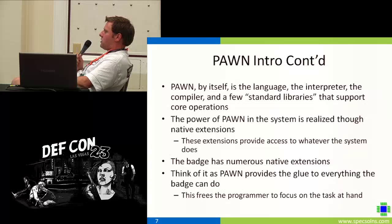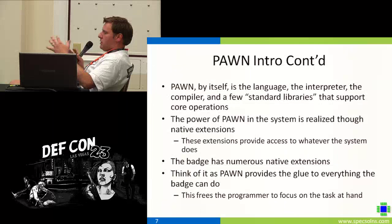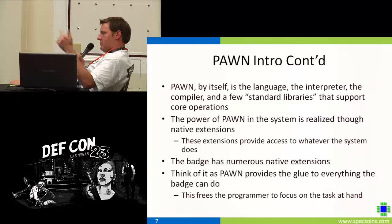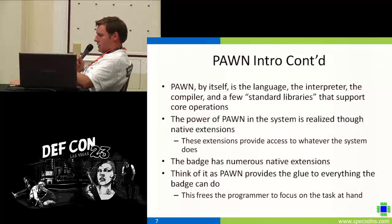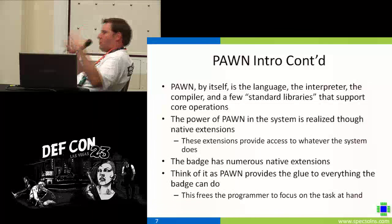When we look at what Pawn is with the badge: Pawn by itself is basically the language, the interpreter, the compiler, and some standard libraries that support core operations — that's part of the Pawn package you can download, it's freeware. But really where Pawn shines is you can easily extend it with native extensions, and this is what's been added for the badge. There are extensions that look just like function calls that allow you to do things like sending CAN messages, setting timers, and doing stuff like that. The way I like to think of it is the badge provides this library of things you can do, and Pawn is the application that glues it all together.